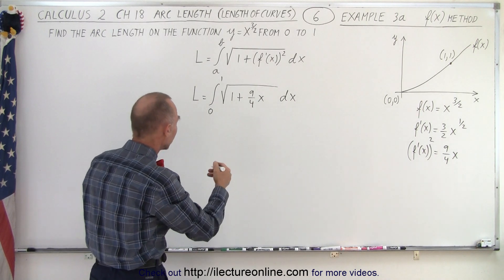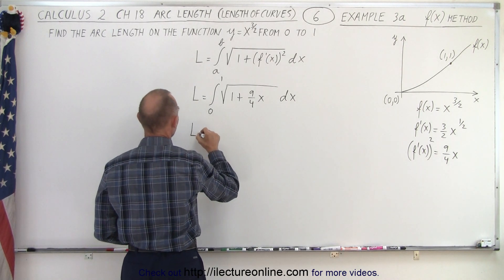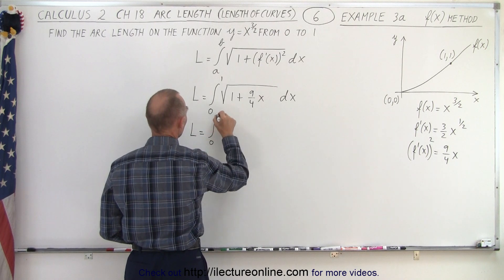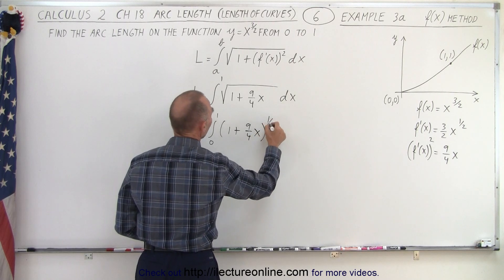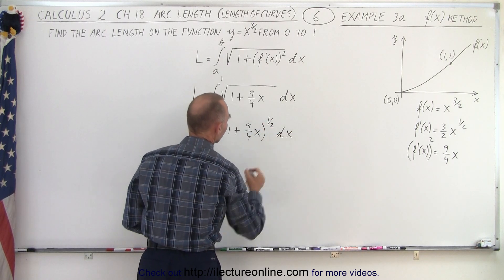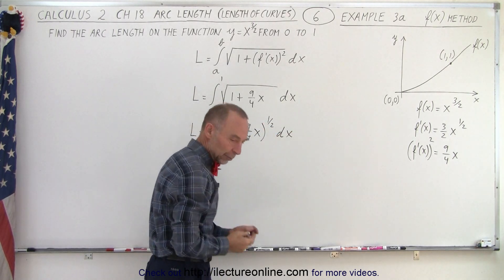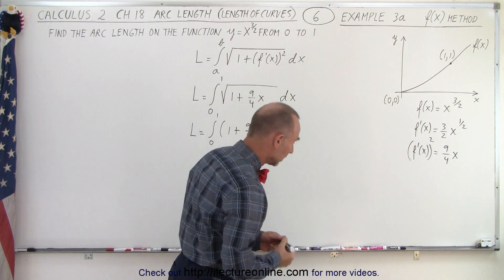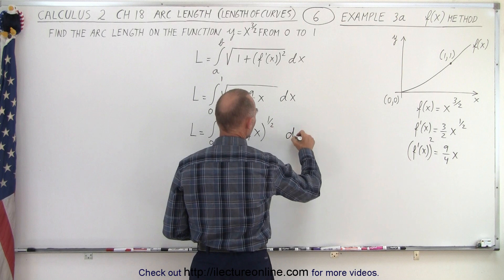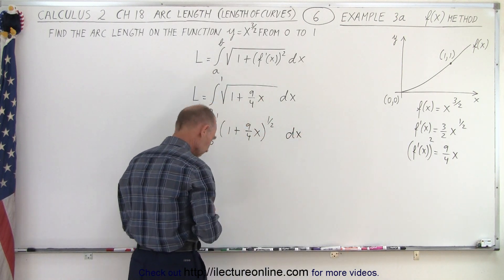It might help to write in different formats, let's try that. L is equal to the integral from zero to one of the quantity one plus nine over four x to the one half power dx and let me leave a little bit room on the dx portion there because here we're going to need the proper differential.